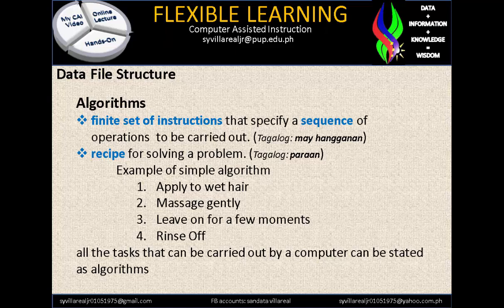Without such a guide, it cannot be classified as an Algorithm. The second meaning is a recipe for solving a problem. An example of a simple algorithm: apply to wet hair, massage gently, leave on for a few moments, rinse off — like how to use shampoo. All tasks that can be carried out by a computer can be stated as an Algorithm.